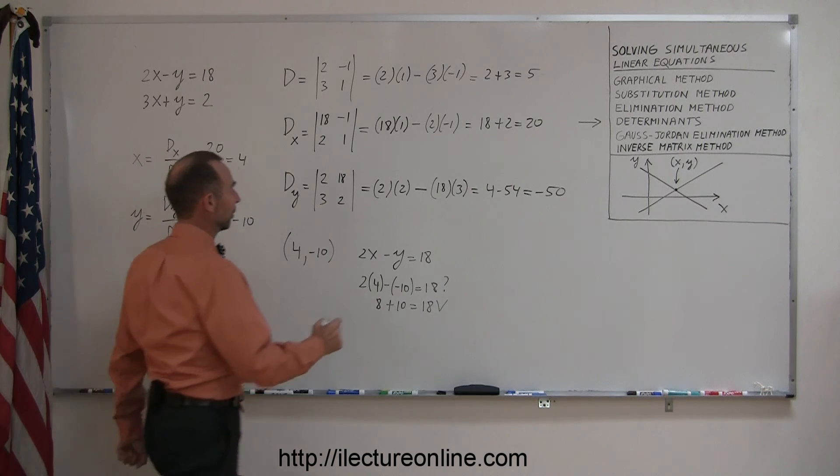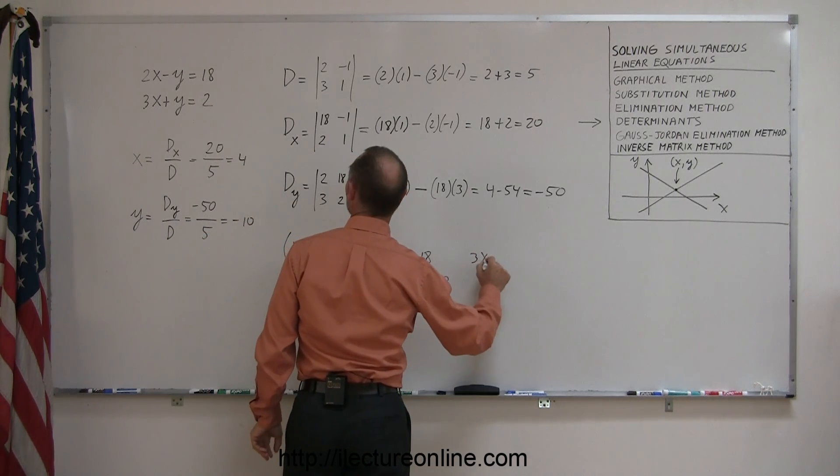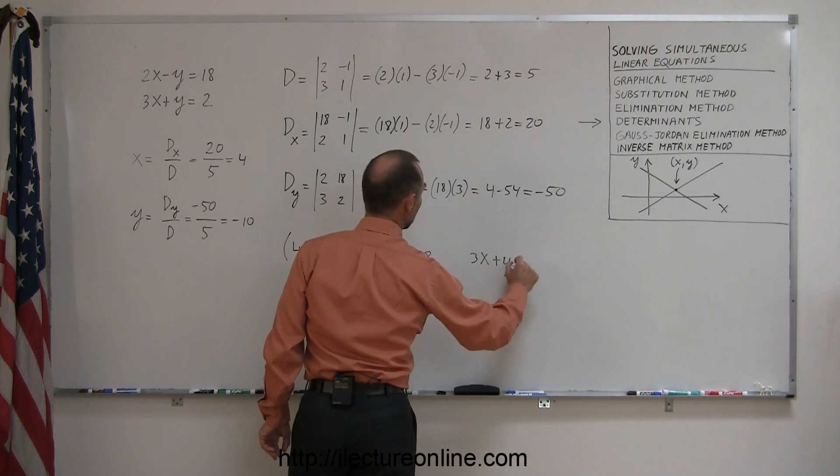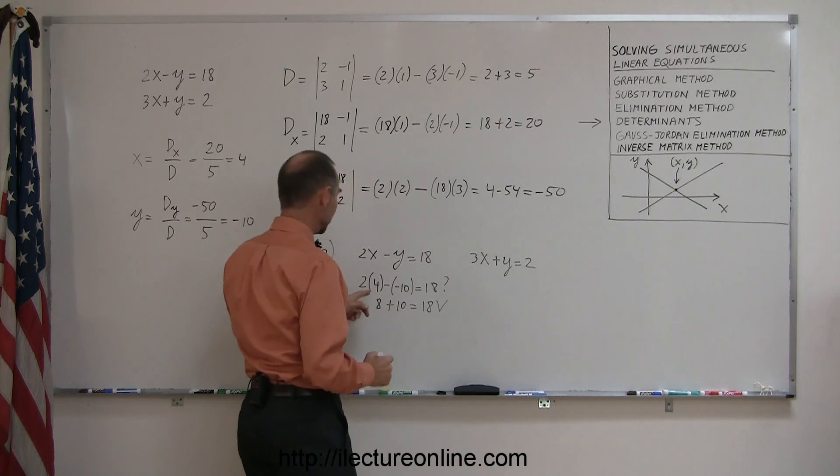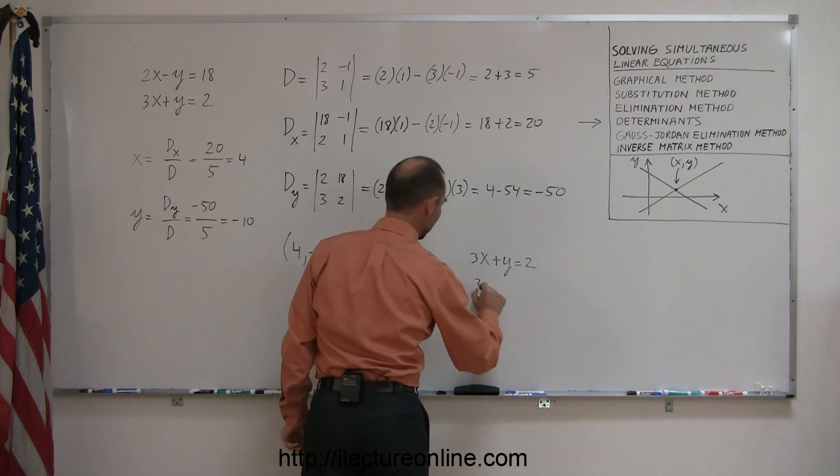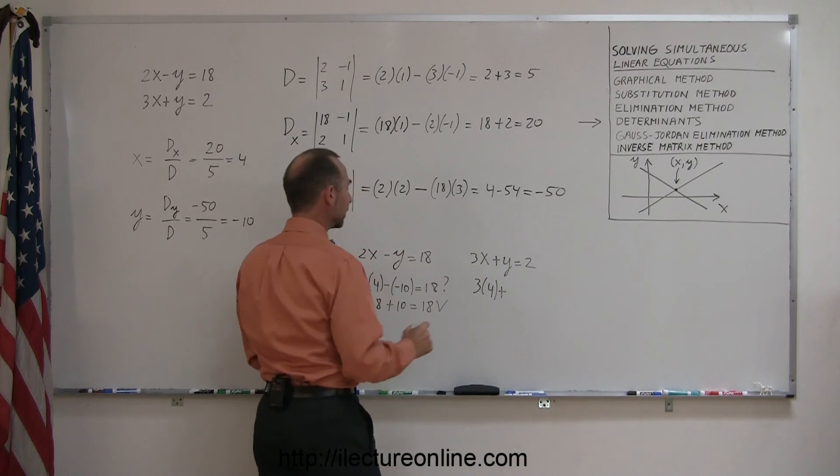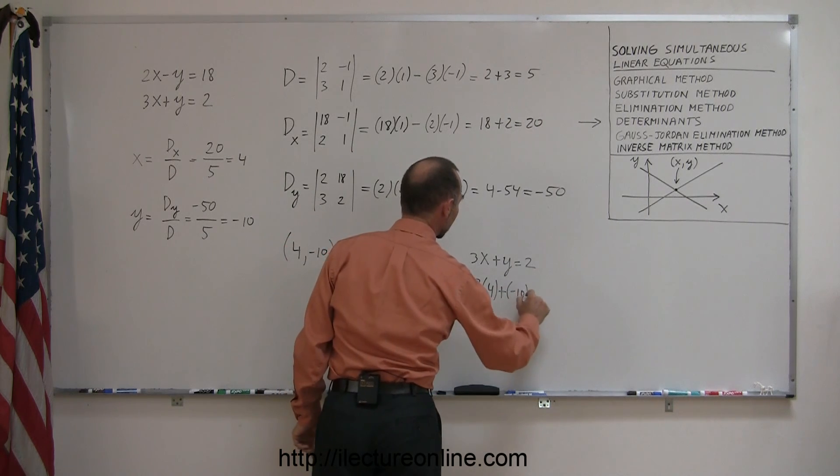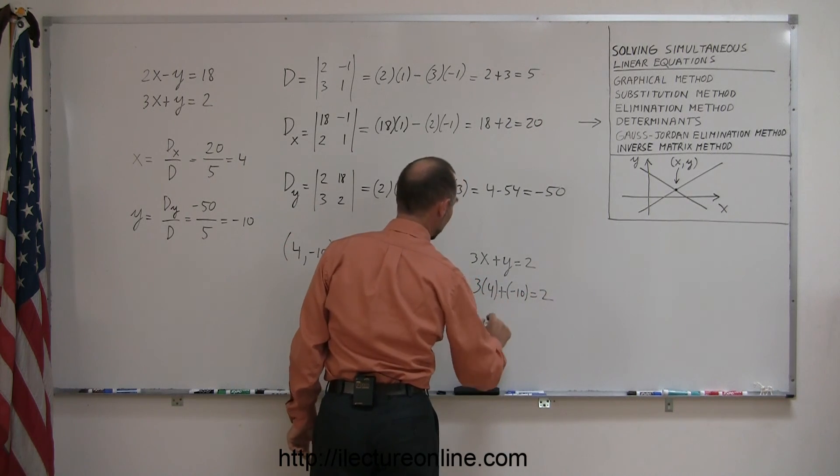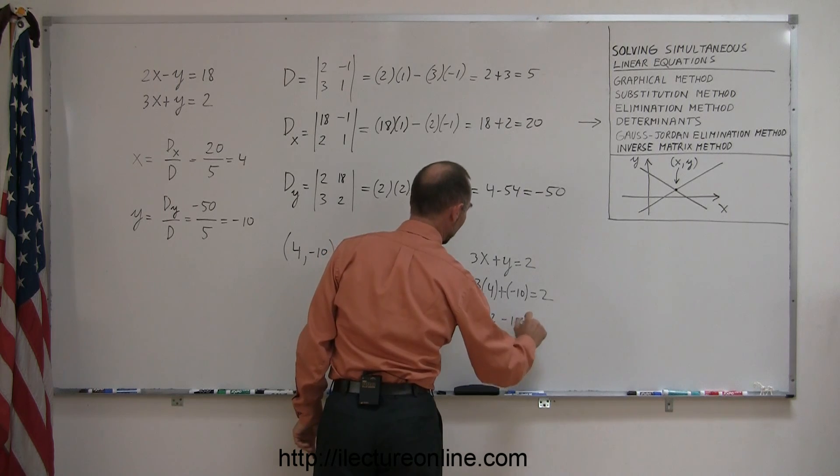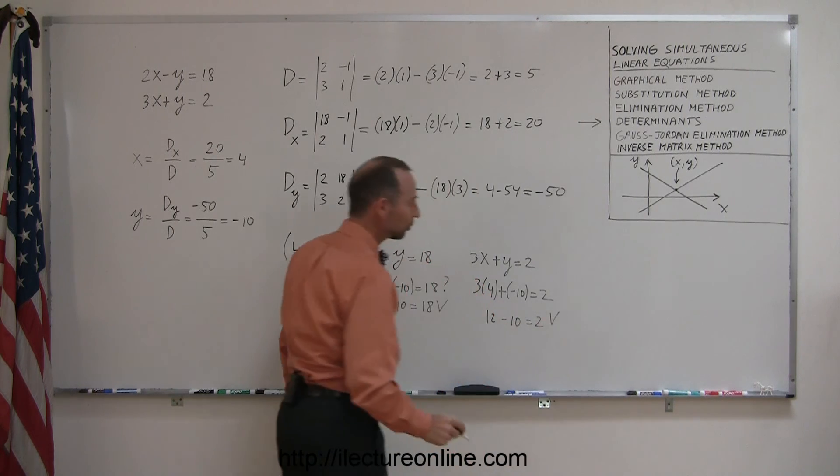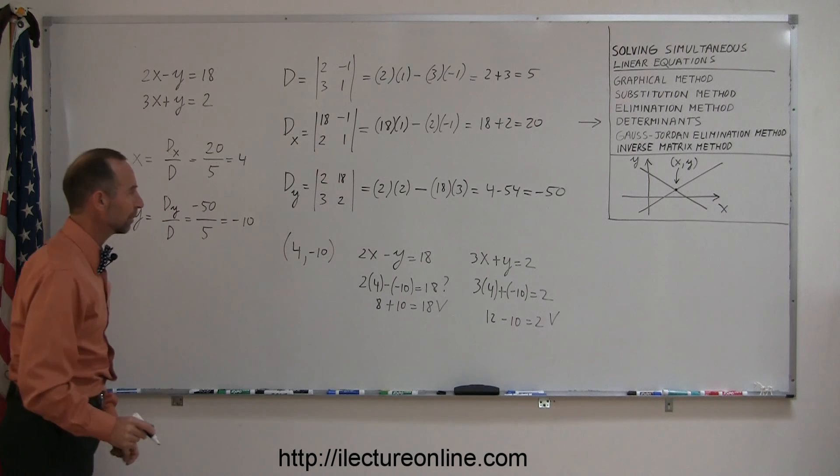Taking the second equation, we get 3x plus y equals 2, again plugging in the value of 4 for x, and the value of negative 10 for y, that should equal 2, 3 times 4 is 12, minus 10, sure enough, that's equal to 2, so it looks like we did that problem correctly.